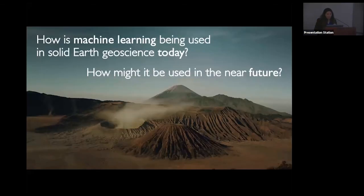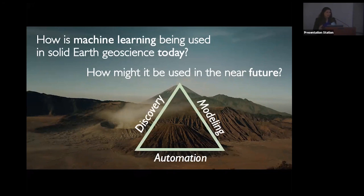The question here is: how is machine learning actually being used in solid earth geoscience today, and how might it be used in the future? When we were thinking about writing our review paper, we came up with three different modes of machine learning: automation, modeling, and discovery. These aren't meant to be distinct — they overlap — but it's a useful way to think about the kinds of tasks you can use machine learning for in sciences.